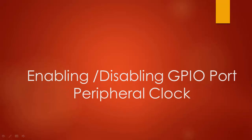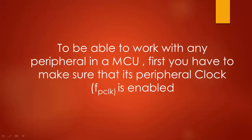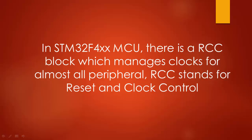In this lecture, let's explore how to enable and disable the GPIO peripheral clock. To be able to work with GPIO or any other peripheral, you have to first enable the peripheral clock. In STM32F4XX based microcontrollers, the clocks for the peripherals will be enabled in the RCC register, which stands for Reset and Clock Control.